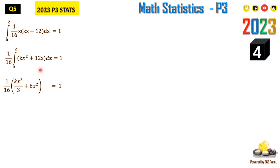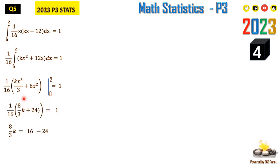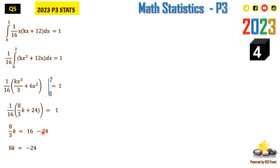Integrating kx² gives kx³/3, and integrating 12x gives 6x², with limits from 0 to 2. Taking the upper limit minus the lower limit: 2³ = 8, so we get 8k/3, and 2² × 6 = 24. So (1/16)(8k/3 + 24) = 1. Multiplying through by 16 gives 8k/3 = 16 − 24 = −8, and solving for k gives k = −3.